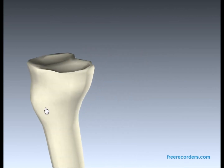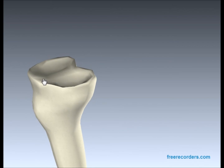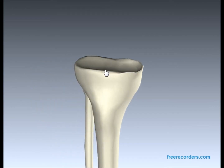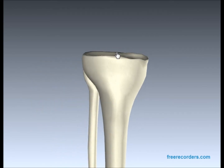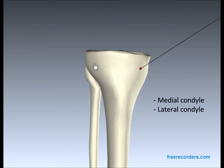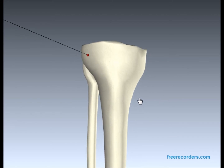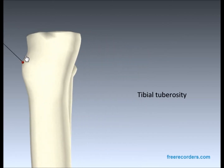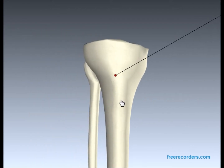On the tibial plateau, you can see this ridge here, which is known as the intercondylar eminence. Just like the femur, we have a medial condyle and a lateral condyle just there. Inferior to those condyles, we have the tibial tuberosity — this pointy part here. The tibial tuberosity is the insertion point for the quadriceps muscles.